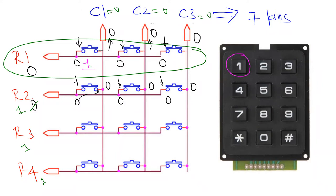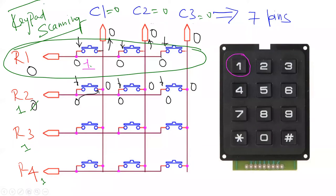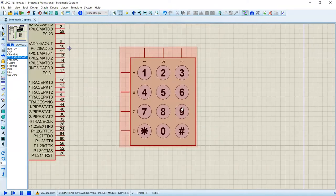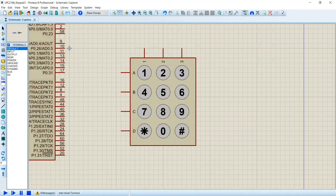Since we have supplied zero in this row and all the other rows are one, we can clearly determine which key is pressed. This is called the keypad scanning algorithm. Through software, we can determine which key the user has pressed.